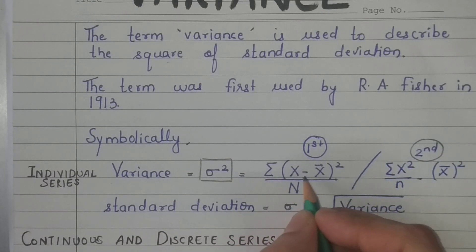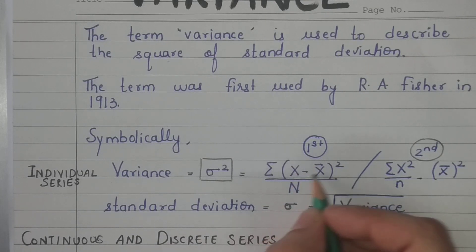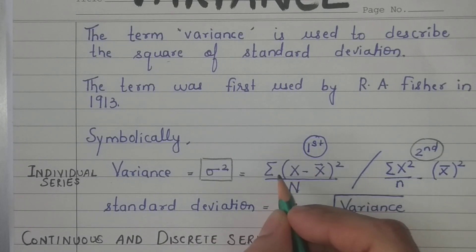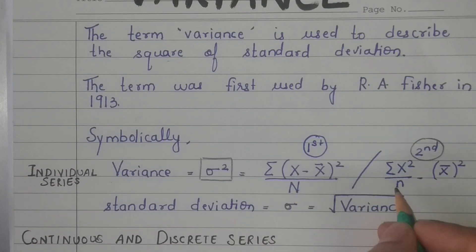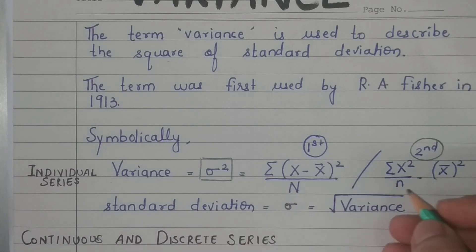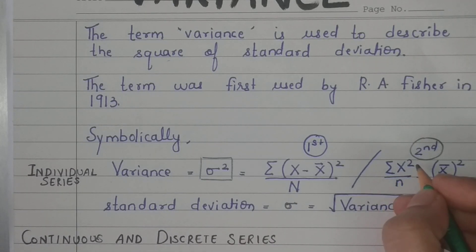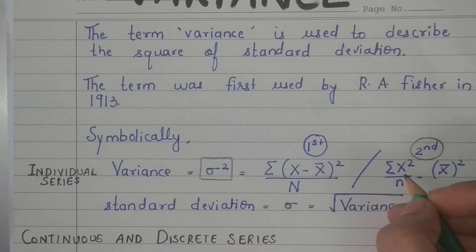There are two formulas for individual series. Number one is: sigma of (x minus mean) squared, upon the number of observations. It can also be written as sigma of x squared — using all available items in your series.